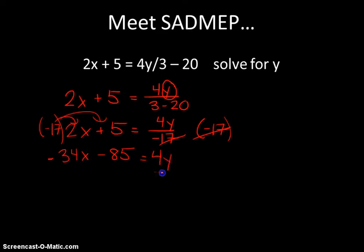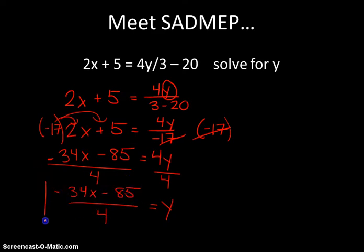Still trying to get y by itself with this 4 being multiplied. I'm going to divide each side by 4 and you end up with y equals negative 34x minus 85 all over 4. So a quick little warm-up here to get us ready for some literal equations.